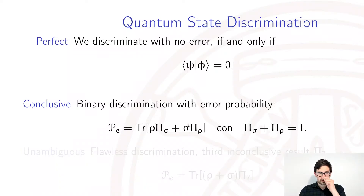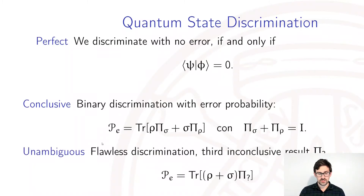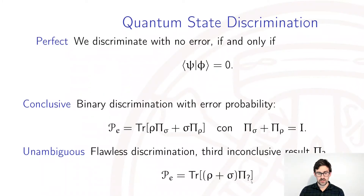The third strategy is unambiguous discrimination, which we require to be flawless, but we must make allowance for a third inconclusive result, described by pi_?. The error probability is then that of measuring that third inconclusive result.